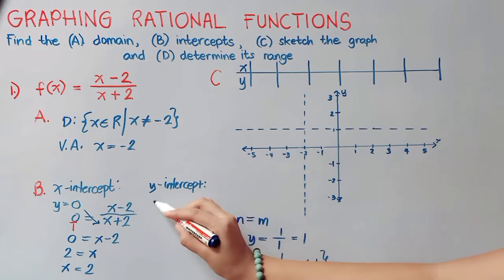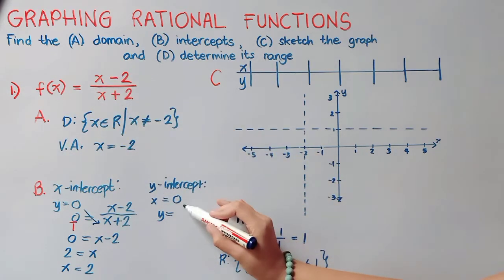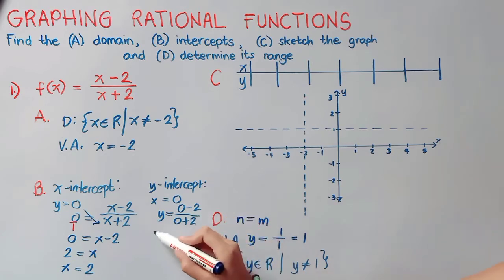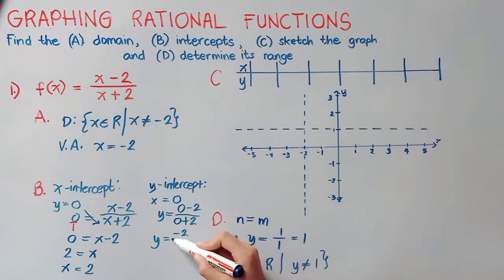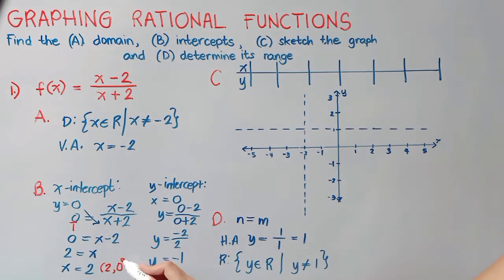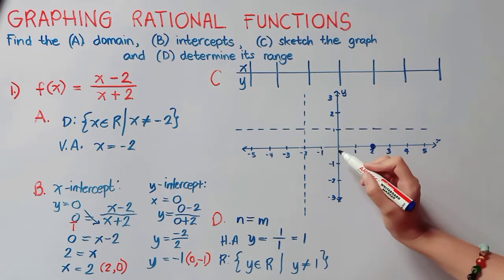Now let us get our y-intercept by letting x equal zero. So y equals 0 minus 2 all over 0 plus 2, which gives y equals negative 2 over 2, so y equals negative 1. This is our y-intercept. We can now plot our intercepts as points: if x is 2, y is 0; and if x is 0, y is negative 1. Plotting those points: (2, 0) and (0, -1).